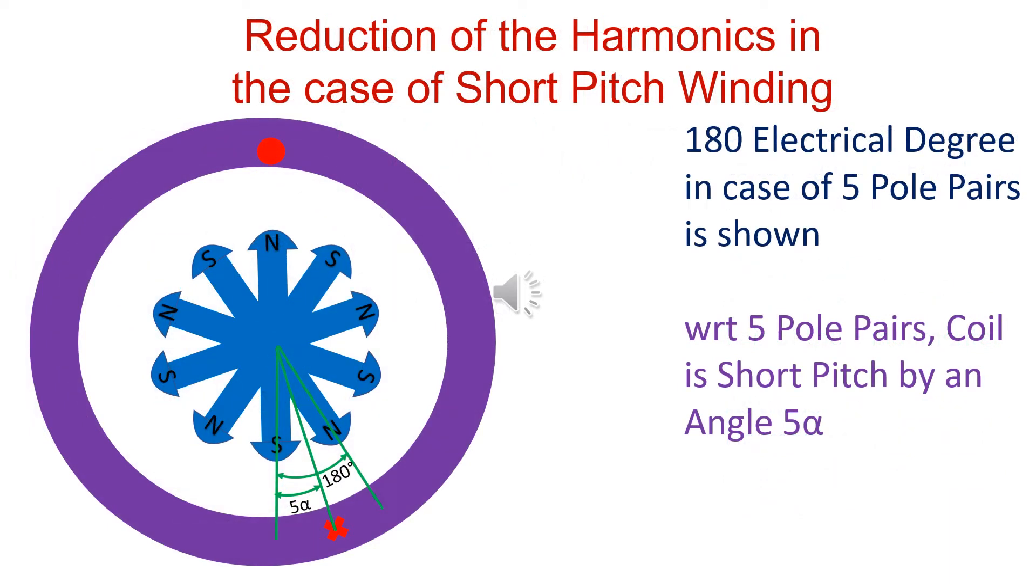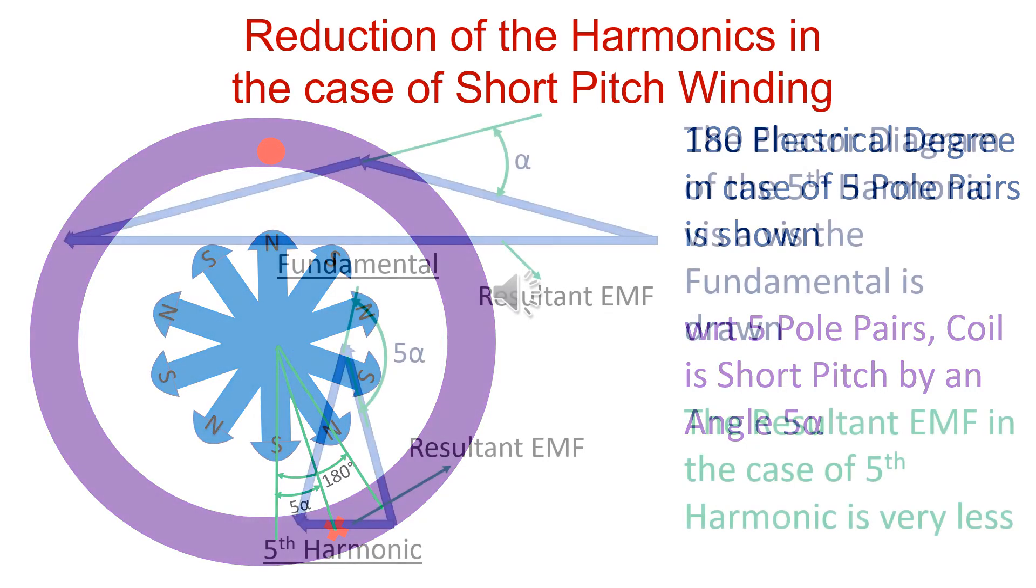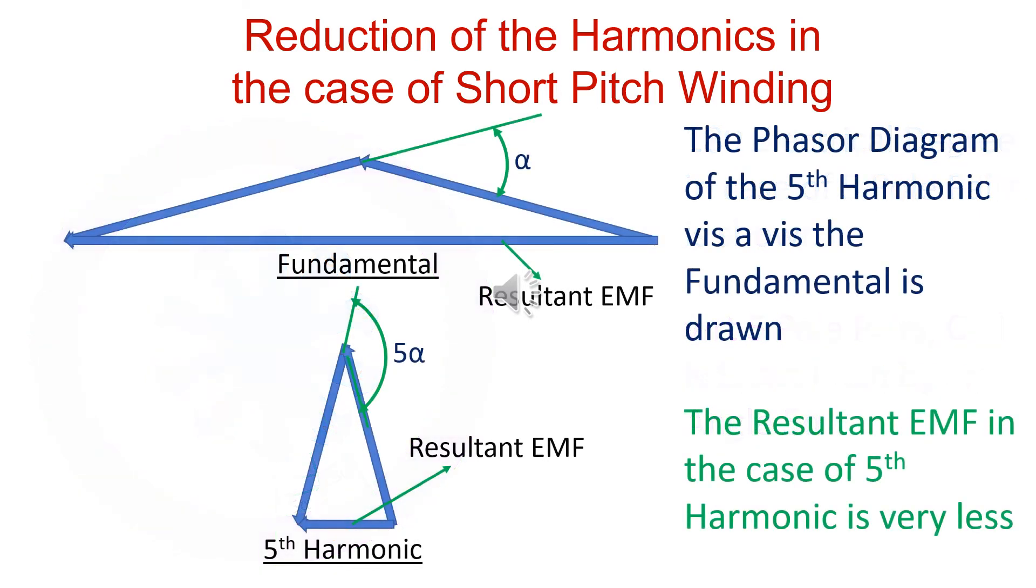With respect to 5 pole pairs, the coil is short pitch by angle 5 alpha. The resultant EMF in case of fifth harmonic is very less.